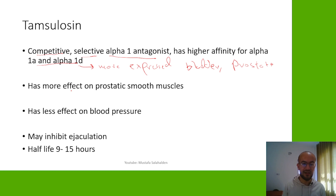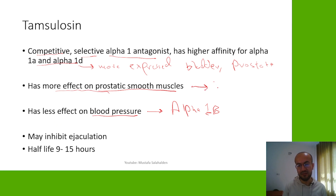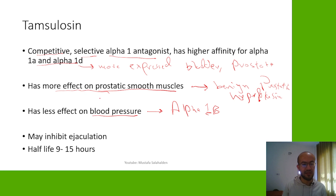Because of this higher affinity for alpha-1a and alpha-1d, tamsulosin has more effect on prostatic smooth muscles and less effect on blood pressure, since blood pressure regulation is more related to the alpha-1b subtype. This is why tamsulosin is used in benign prostatic hyperplasia to improve urine flow, and it has fewer adverse effects on blood pressure compared to prazosin, terazosin, and doxazosin.